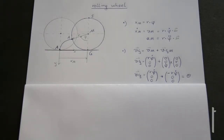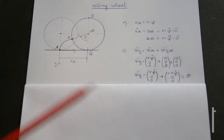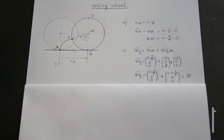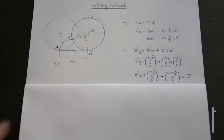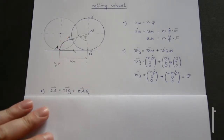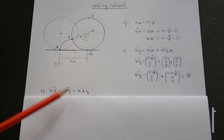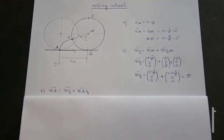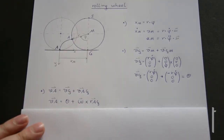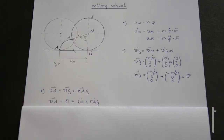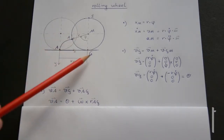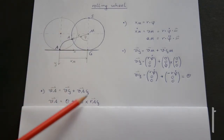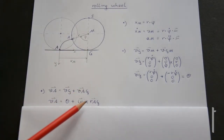Now we could be interested in the velocity of point A. It is very useful to know a point which has no velocity, like point G. For the velocity of A, we write vA = vG + vAG. Since vG = 0, we are left with vAG = omega cross R_AG, where R_AG is the vector from G to A.